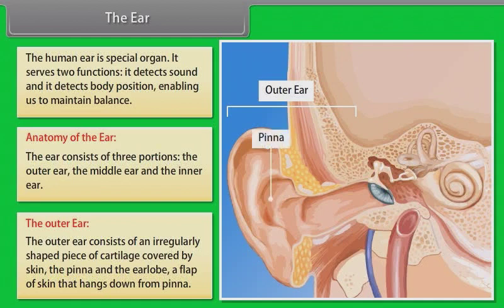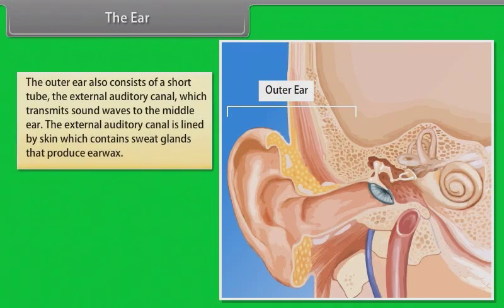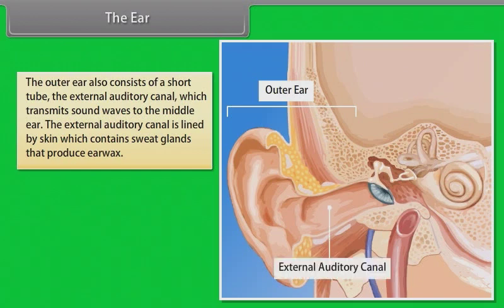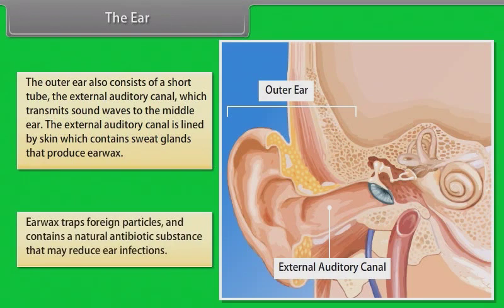The outer ear also consists of a short tube called the external auditory canal, which transmits sound waves to the middle ear. The external auditory canal is lined by skin containing sweat glands that produce earwax. Earwax traps foreign particles and contains a natural antibiotic substance that may reduce ear infections.